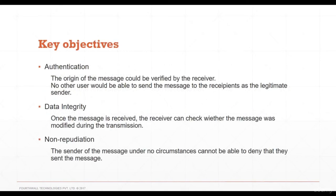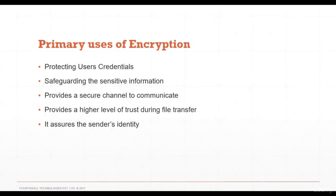Key objectives of encryption: authentication — the origin of the message can be verified by the receiver, and no other user can send a message as the legitimate sender. Data integrity — the receiver can check whether the message was modified during transmission. Non-repudiation — the sender cannot deny that they sent the message. Primary uses include protecting user credentials, safeguarding sensitive information, providing a secure communication channel, ensuring trust during file transfer, and assuring the sender's identity.